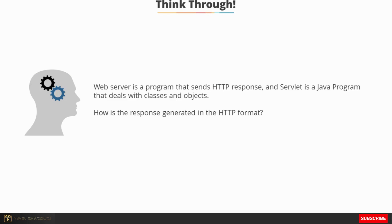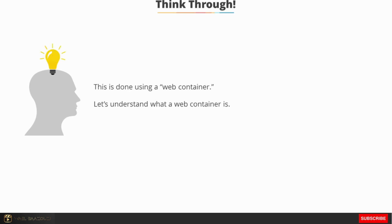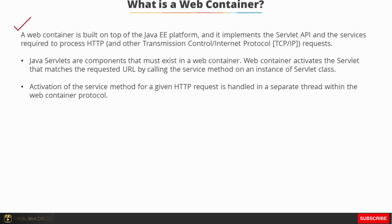The web server is a program that sends HTTP responses, and a servlet is a Java program that deals with classes and objects. How is the response generated in HTTP format? It is the web server, which purely works on the HTTP protocol, that does that — using the web container present on the web server. A web container is built on top of the Java Enterprise Edition platform and implements the servlet API and the services required to process HTTP and other TCP/IP requests.